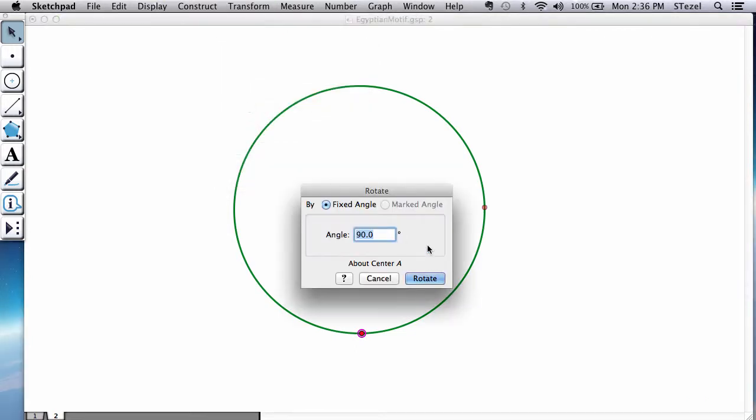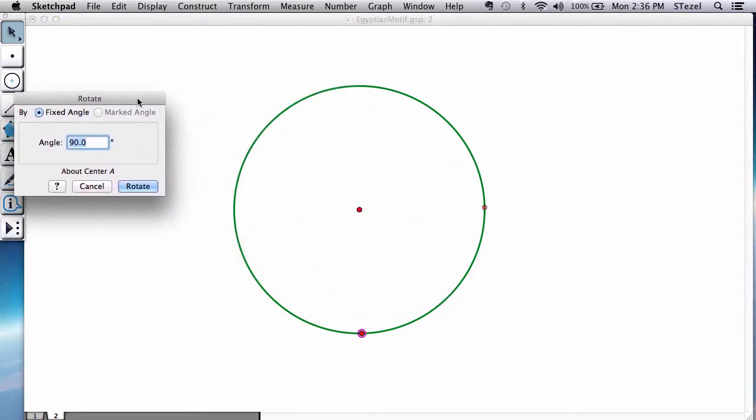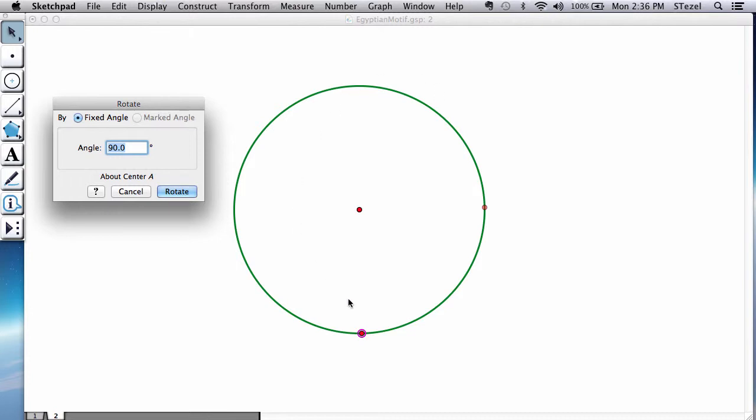And we're going to rotate it. If you think about it, you want to have five evenly spaced points around this circle. So if you think about it, it should be 360 degrees divided by 5, which is 72.